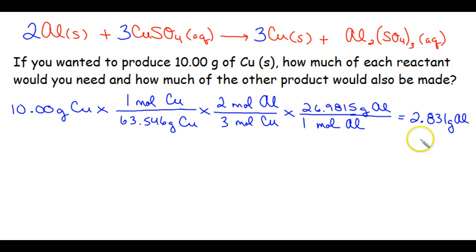You've got another reactant, though. So we're going to stoic again from 10 grams of copper. Same first step because we have to convert the grams of copper to moles of copper.